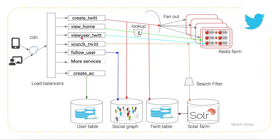The view user tweet service works as follows: if someone has tweeted, all their information is stored in the tweet table. If you want to query that, you provide a Twitter user ID, retrieve all their tweet IDs, gather all the tweet information, create a JSON object, and display it in the UI.